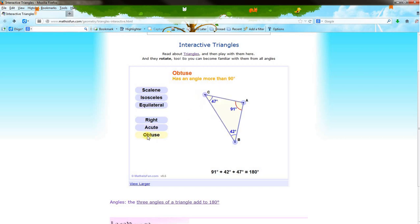An obtuse triangle is a triangle with only one obtuse angle. In this example, the vertex A always stays more than 90 degrees.